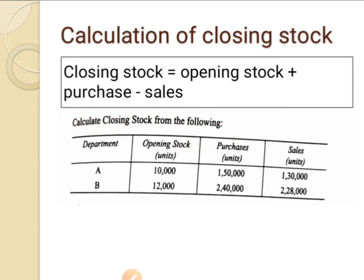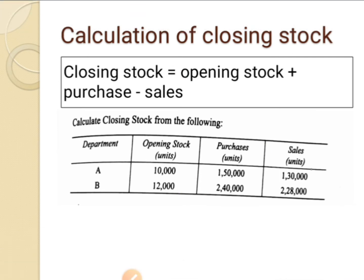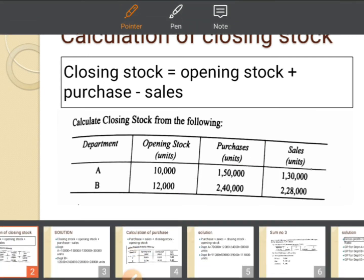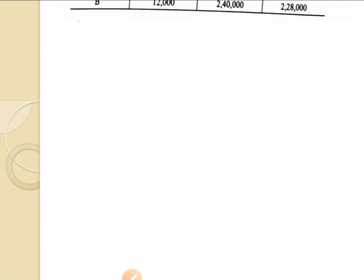Opening stock, purchase, and sales are given. Opening stock plus purchase minus sales will give you closing stock. So 10,000 plus 1,50,000 minus 1,30,000 — that will give you the closing stock.